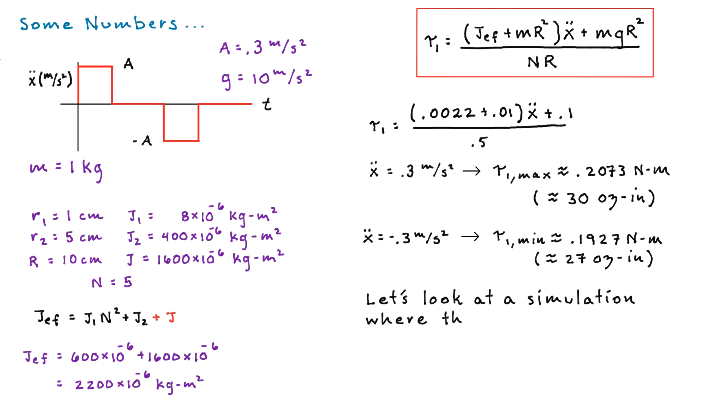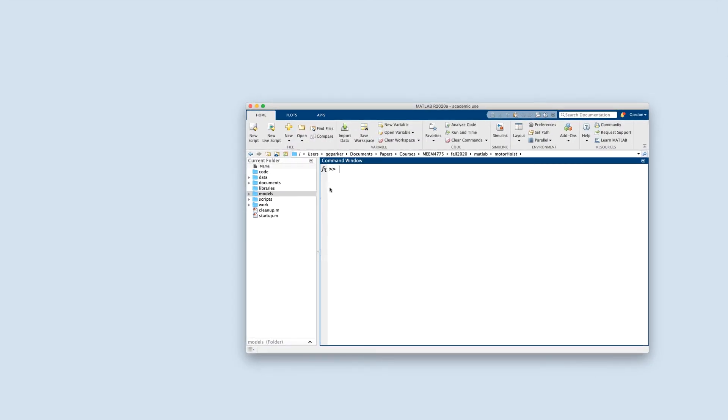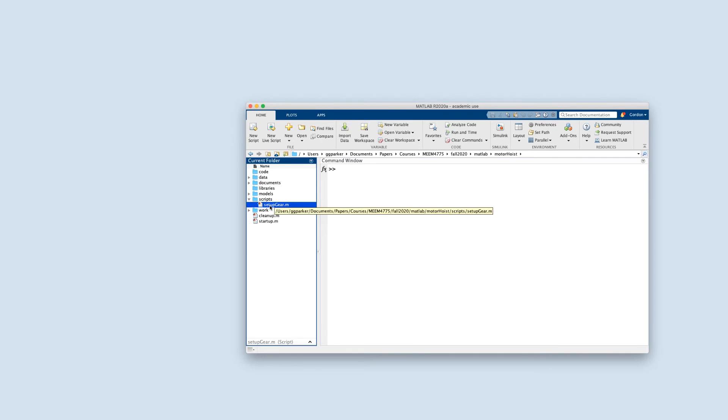Now we're going to have some fun with it in Simscape. And to do that, I have to get a little bit more specific about the pulse coast pulse profile. So let's have each of the pulses last for one second, and the coast is 0.5 seconds. Let's see what we have here. I have a little setup script that just defines all the parameters that we were looking at a moment ago. And I have an old model and a newer model, so let's look at the newer model.